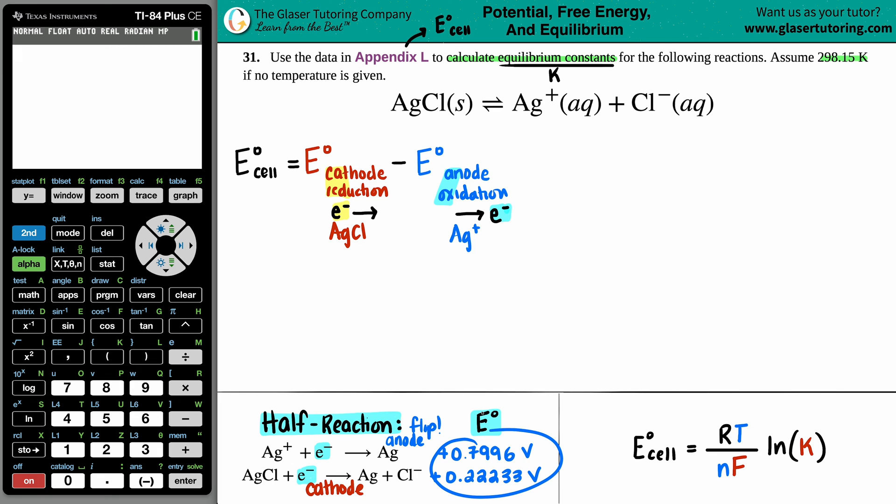You do not have to multiply this by any values, whatever the cell potentials are in that appendix, those are the values that you're going to take. So we can now find out that E cell by just doing the cathode minus the anode. The cathode was 0.22233. And I'm going to subtract that by 0.7996. Okay. E cell equals 0.22233 minus 0.7996. Looks good to me. Got to go out to the ten thousandths place. So this would be a negative 0.5773. And that's at volts.